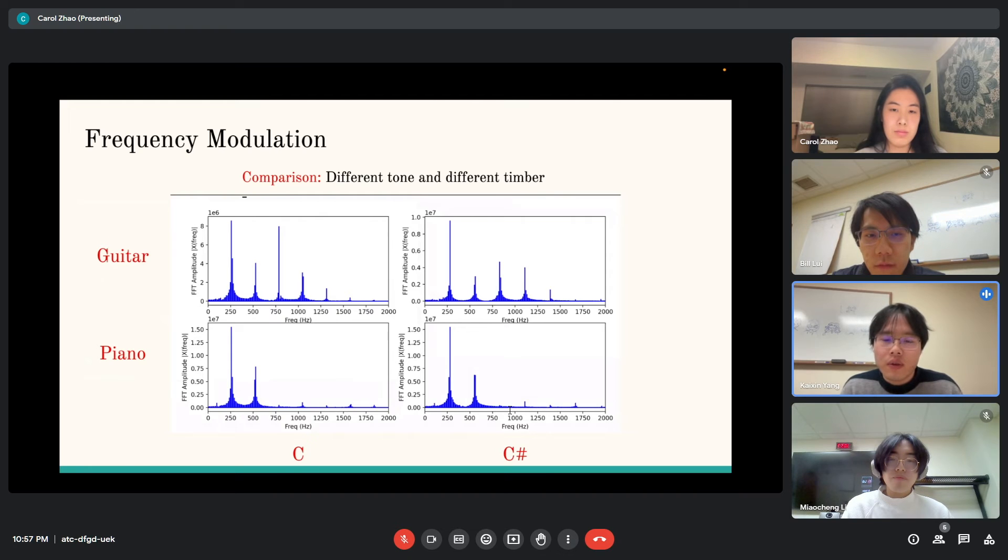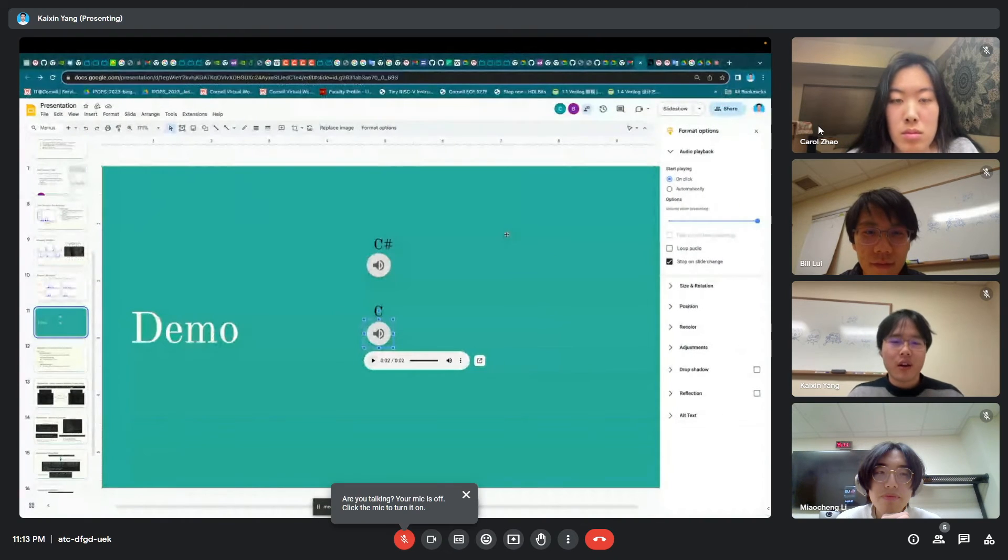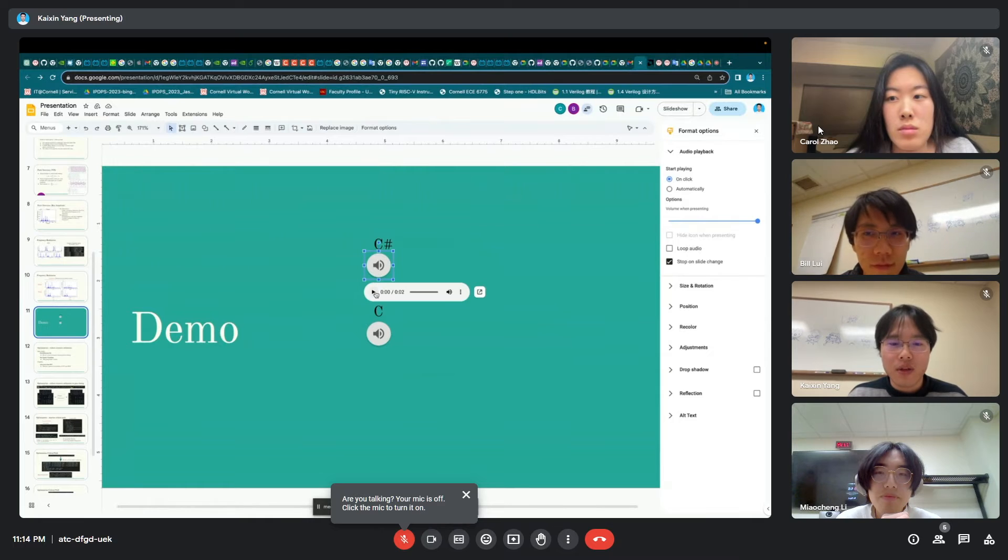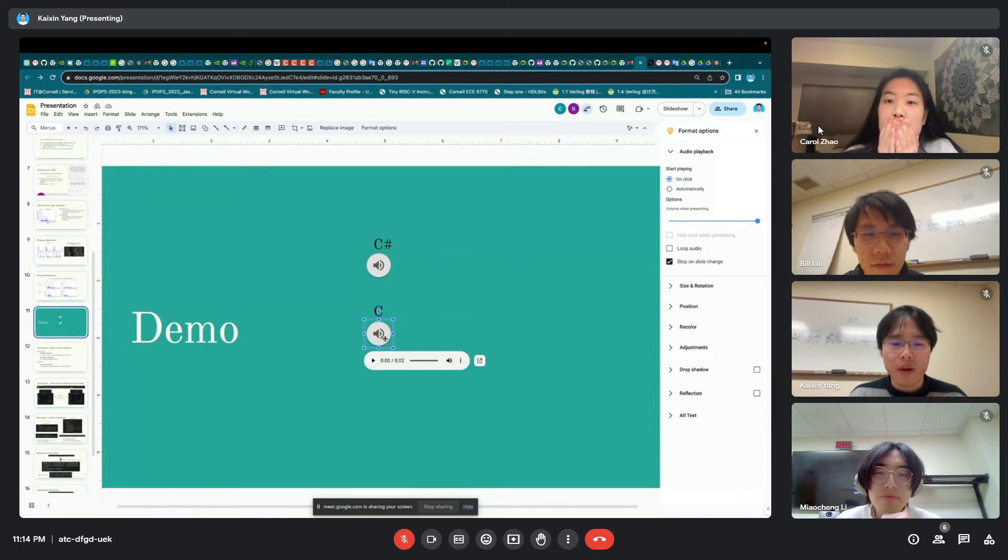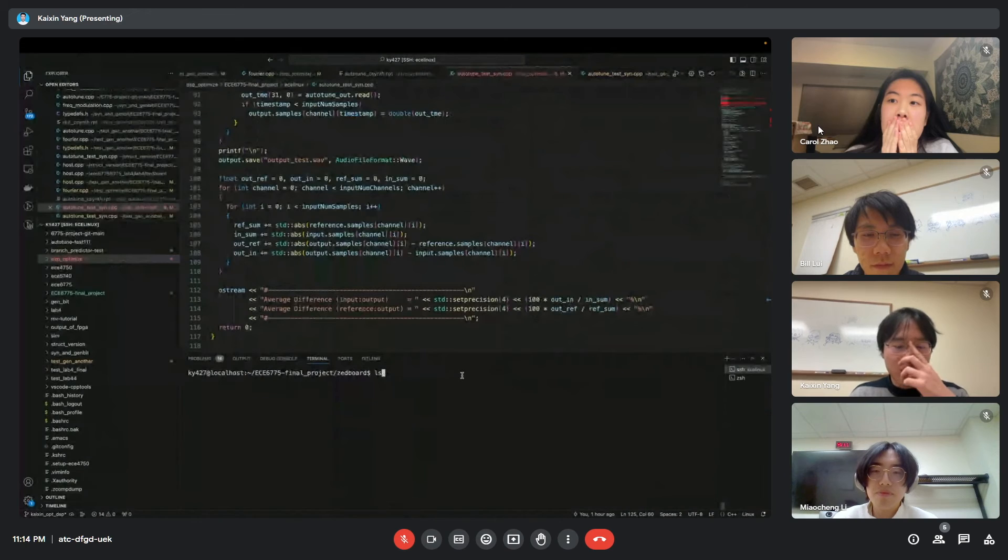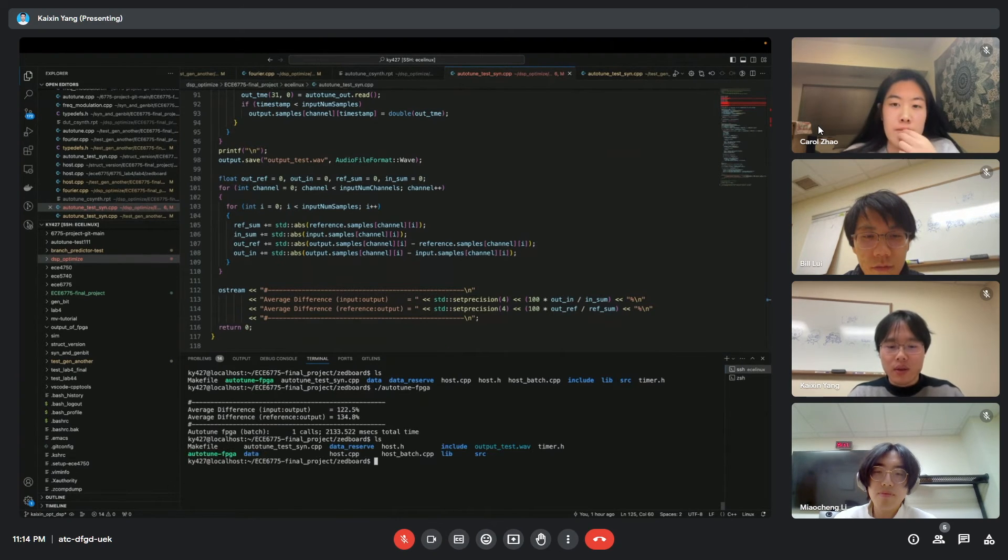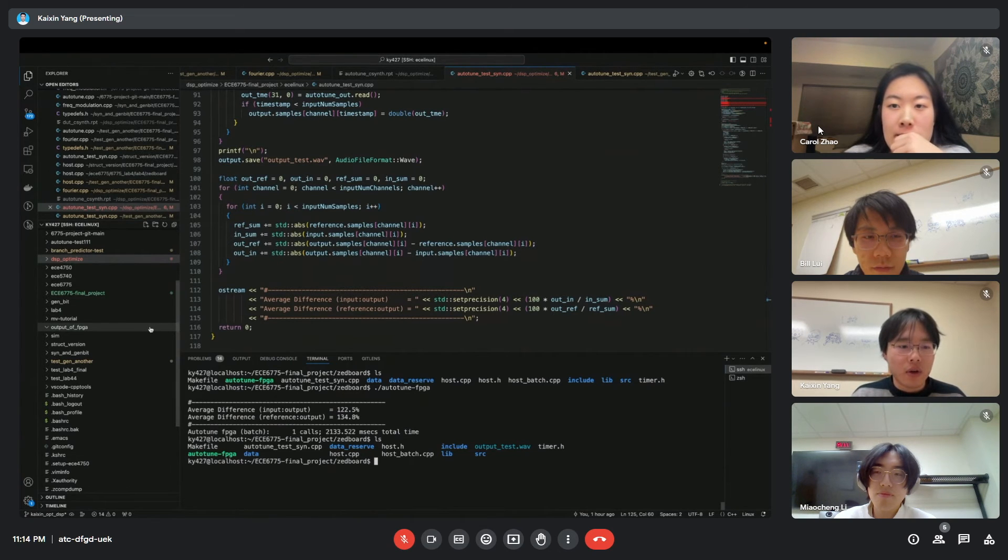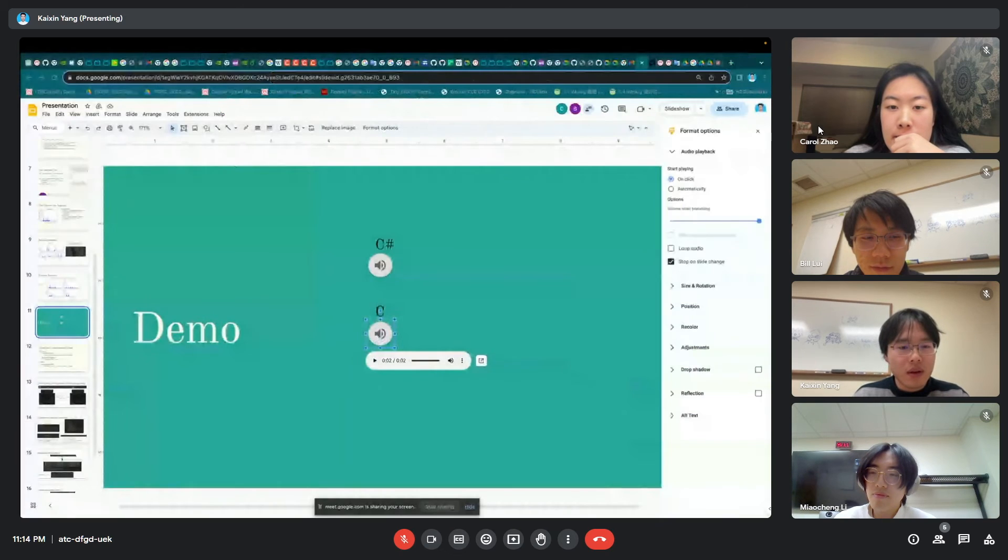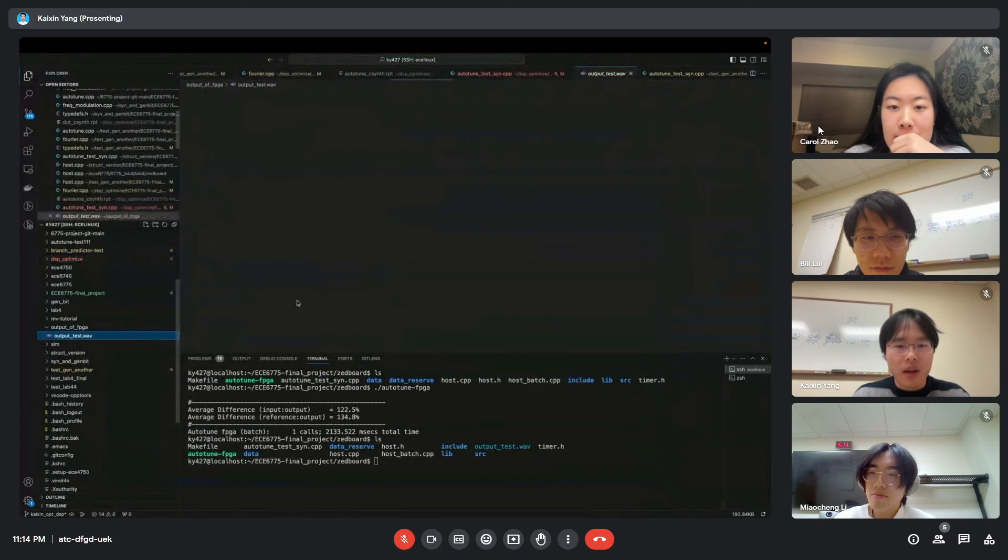Here we're going to show our demo. This is the input wave, C sharp. And this is the reference wave, C. So we run the auto-tune on the FPGA. This will output a result wave file, and we will transfer this file to this folder so we can listen to the result here.